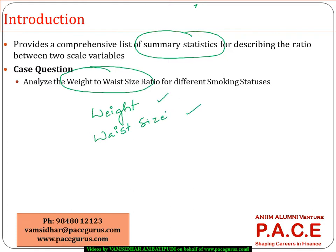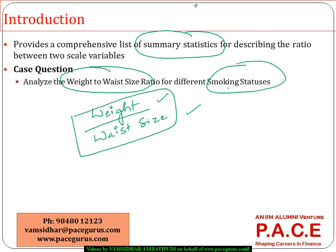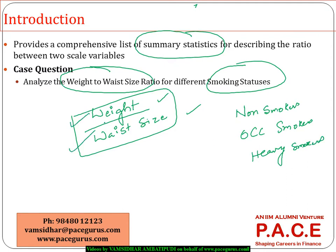I am not looking at analyzing each variable separately, but I want to look at the ratio between the weight and the waist size, grouped by smoking status. Is there any difference in the weight-to-waist-size ratio for non-smokers, occasional smokers, and heavy smokers? I want to look at the significance in this ratio — not the difference in individual values, but the ratio of the two variables. That is where I take the help of the ratio statistics feature of SPSS.